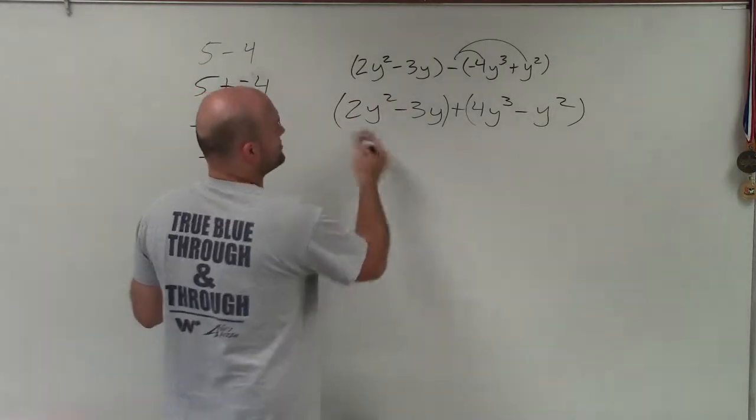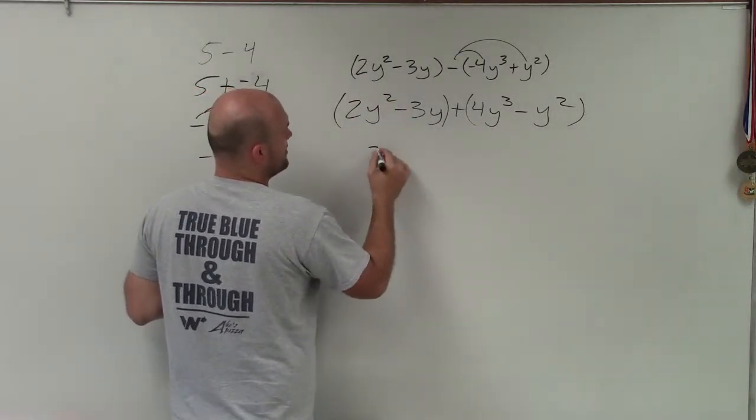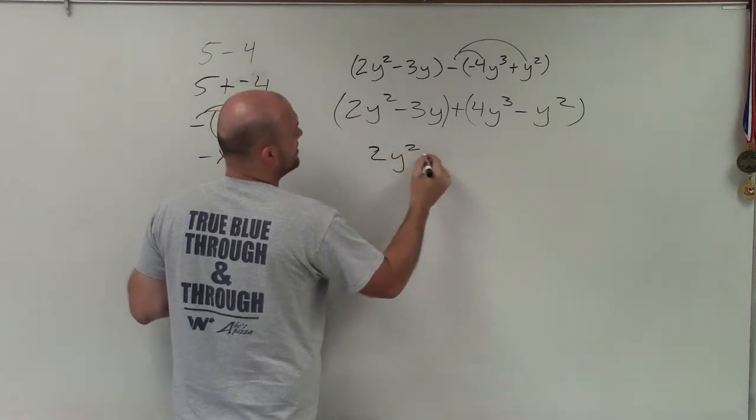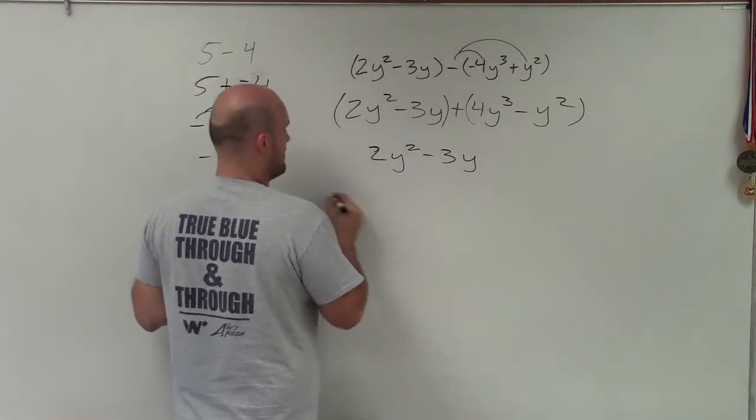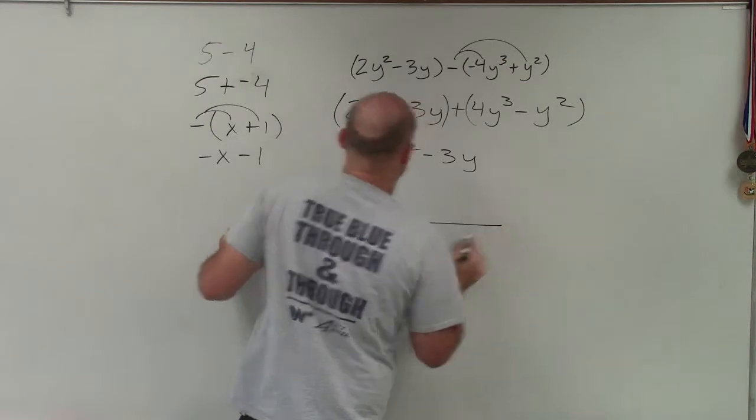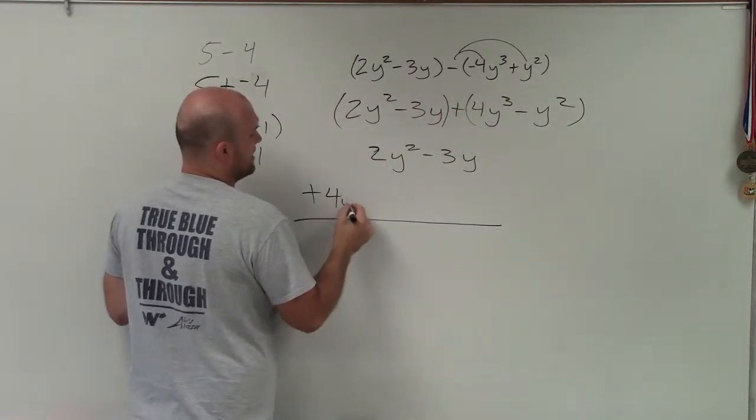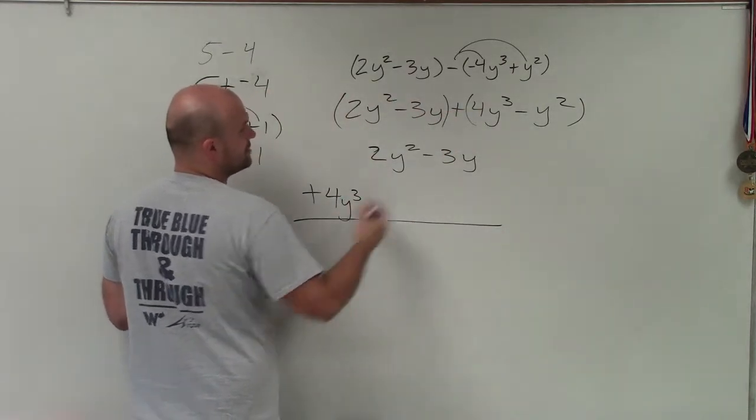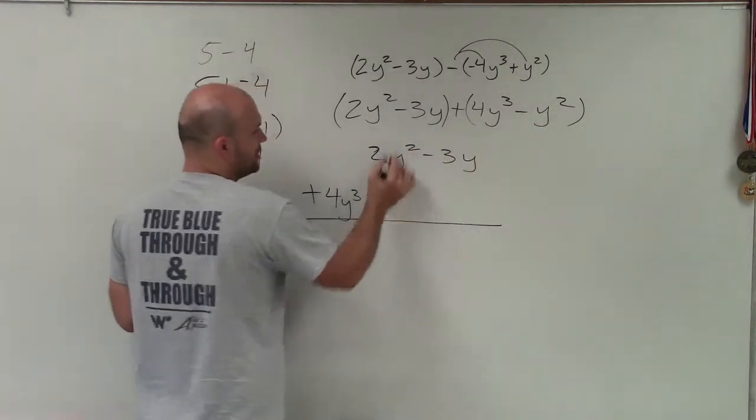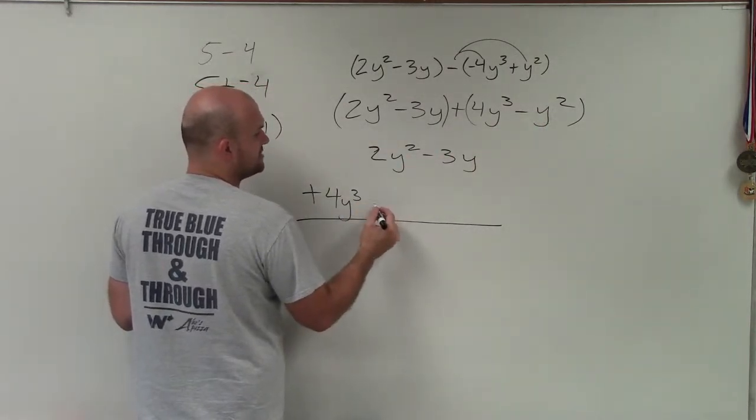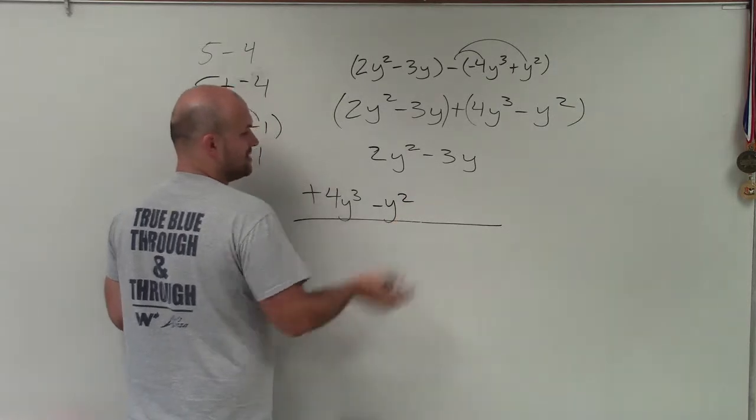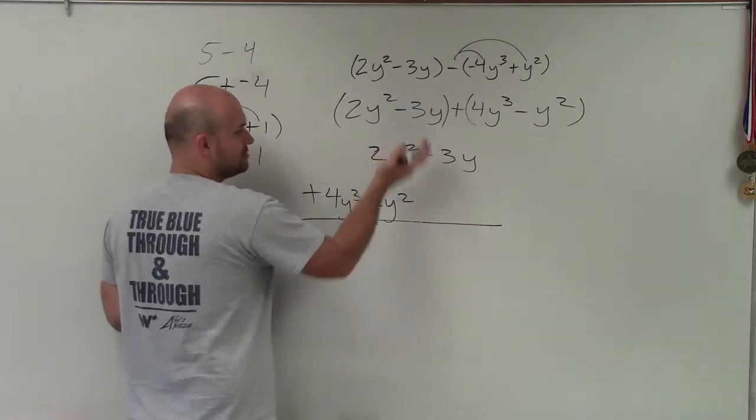Now let's just write it out. Make sure you have them in descending order here. I'd have 2y squared minus 3y, and then I'm going to add. Now, notice there's no other terms for 4y cubed, so I'm going to write that right here. I have 4y cubed, and then I'll put a negative y squared under this column for the y squareds so I can add them up directly.